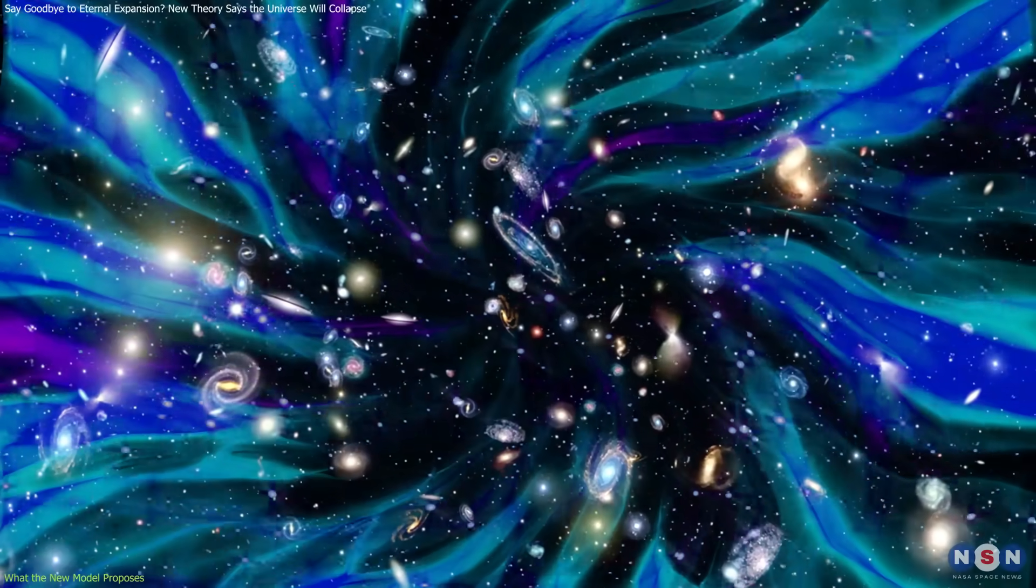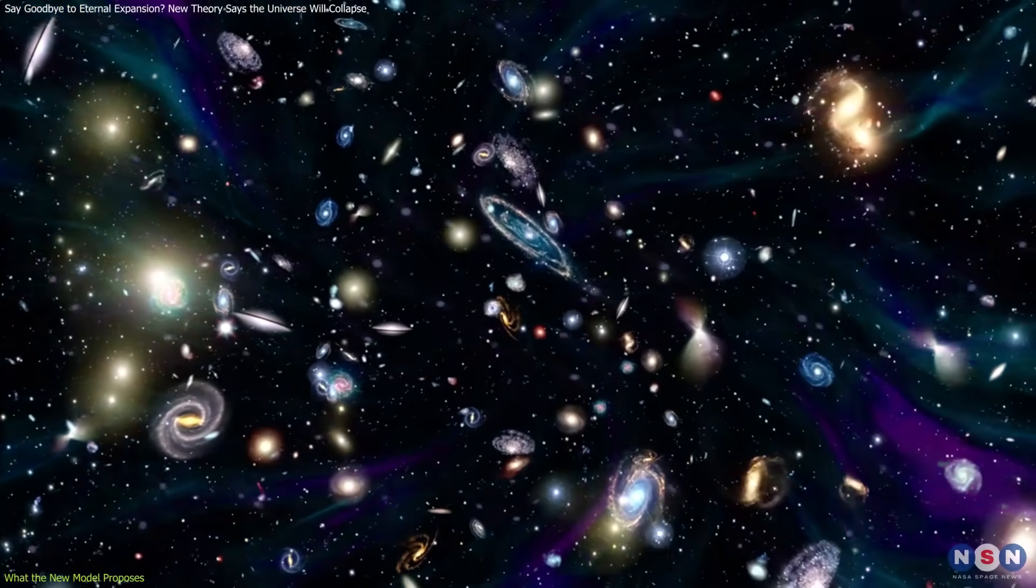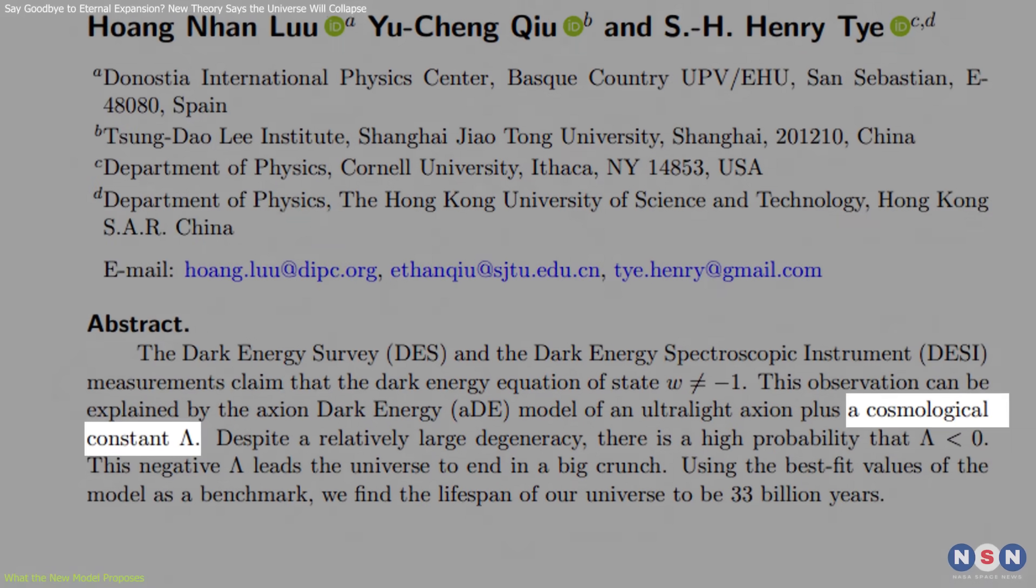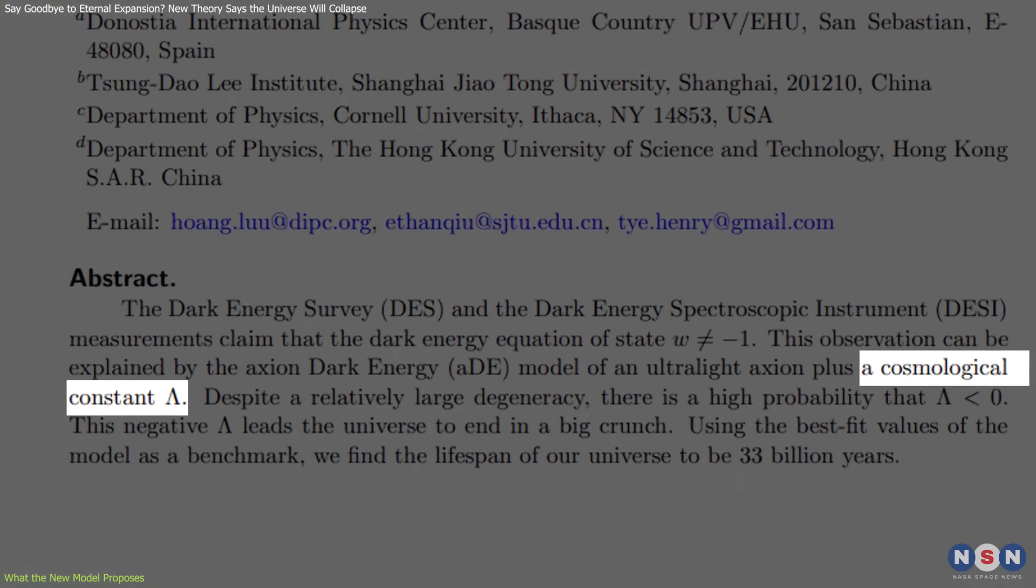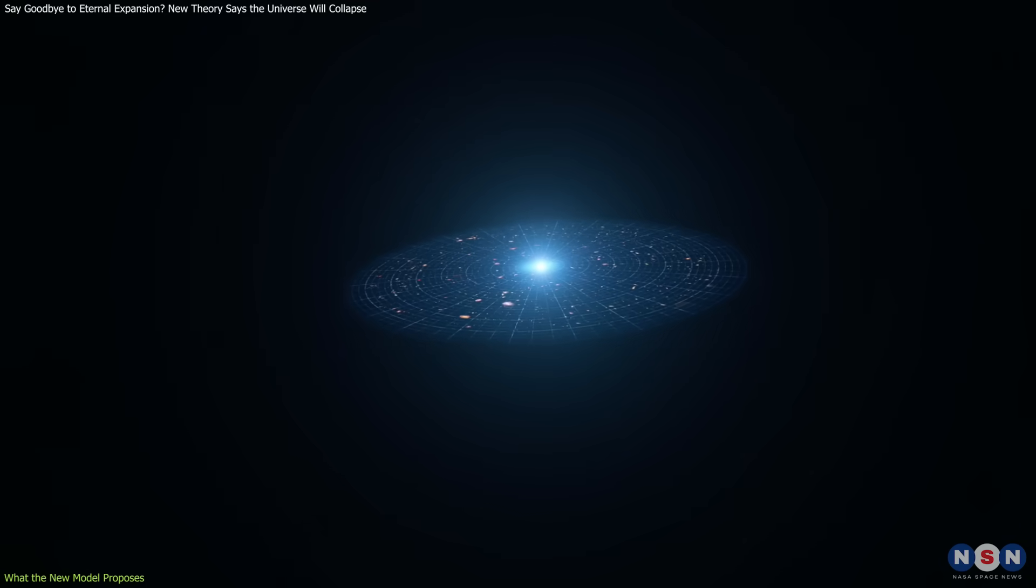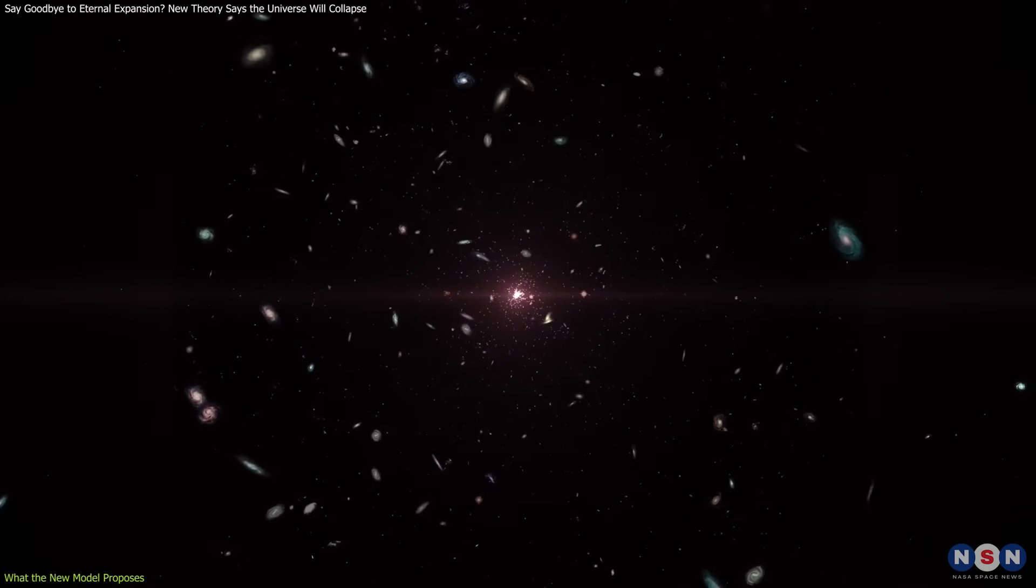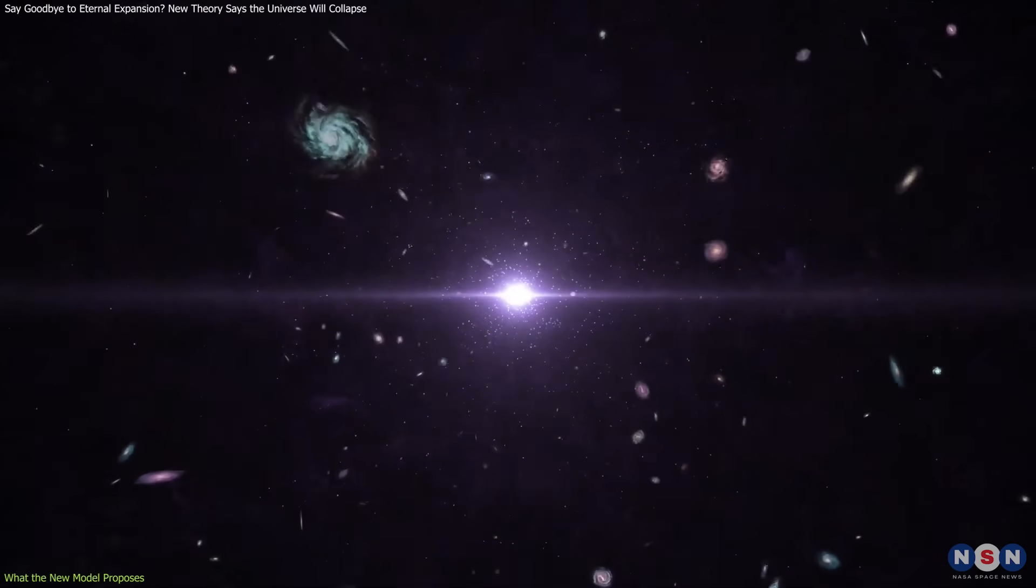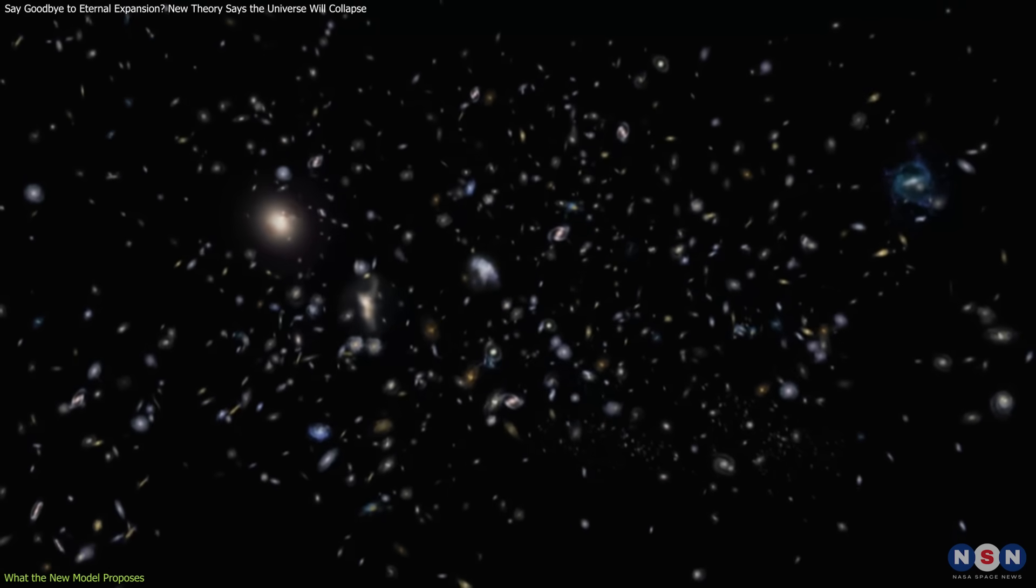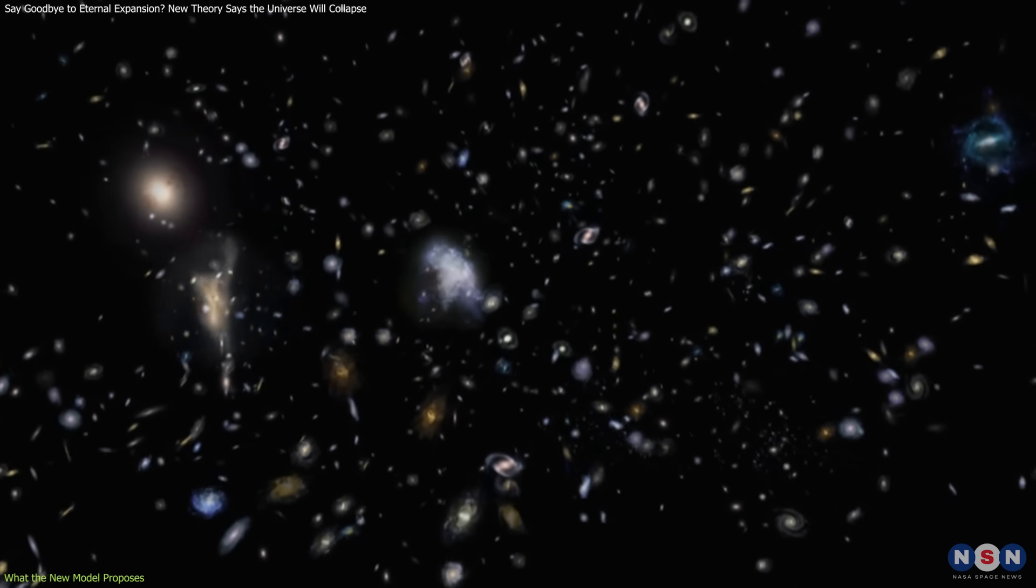Over billions of years, the push from dark energy weakens. Alongside the axion, the team adds a negative cosmological constant. Normally, we think of the cosmological constant as a positive value driving expansion. A negative one would exert a contracting influence, countering expansion. Together, these elements create a cosmic balancing act.